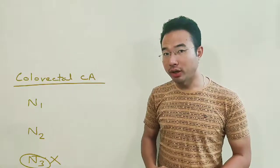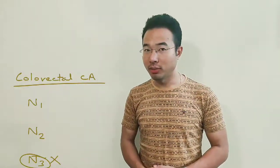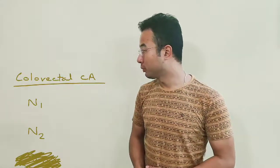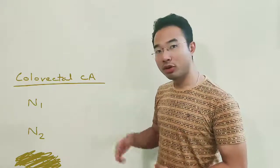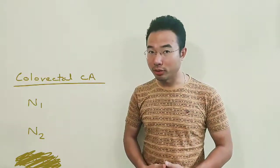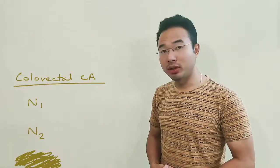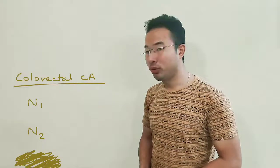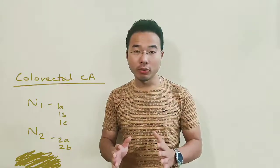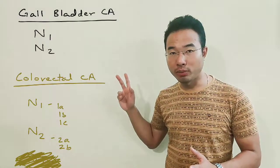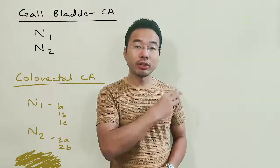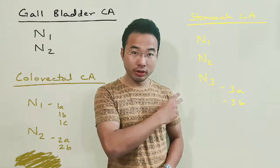For colorectal carcinoma, the colon being smaller in diameter than the stomach cannot get N3. So it makes do with N1 and N2 only, but it's not going to be equal to the gallbladder either. It divides N1 into A, B, C and N2 into A and B. So gallbladder has no subdivisions with N1 and N2 only, and stomach being the biggest gets three numbers with subdivisions in N3.